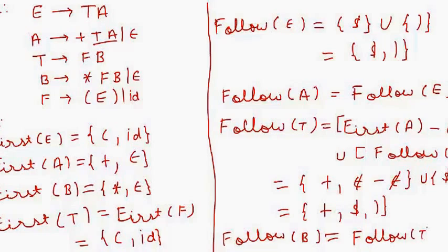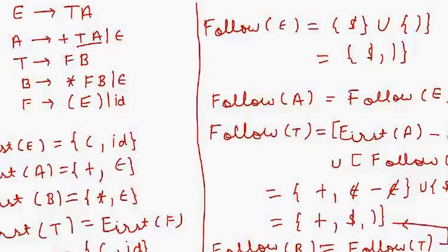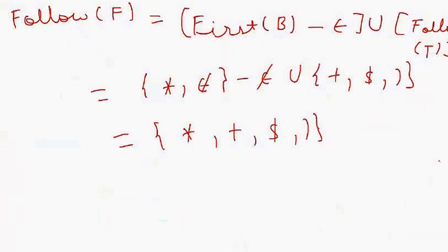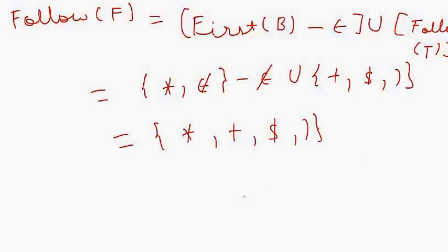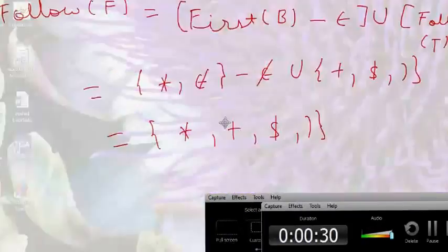Finally, we calculate Follow of F. We apply rule number 3: First of B minus epsilon, union Follow of T. The epsilon cancels out and we get Follow of F equals { '*', '+', $, ')' }. So this was one example to calculate the Follow Set. In the next tutorial we will see one more example to calculate Follow Sets. Thank you for watching.